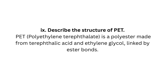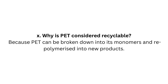Question 9: Describe the structure of PET. PET (polyethylene terephthalate) is a polyester made from terephthalic acid and ethylene glycol, linked by ester bonds. Question 10: Why is PET considered recyclable? Because PET can be broken down into its monomers and re-polymerized into new products.